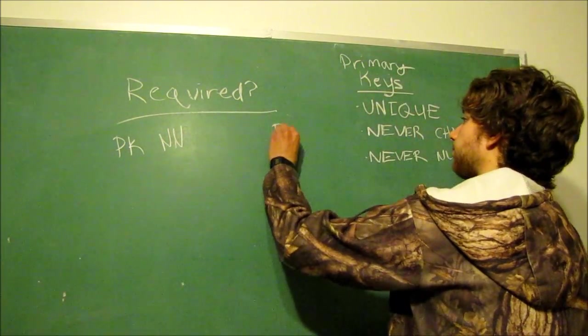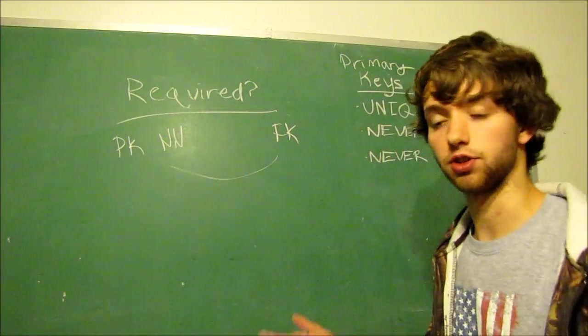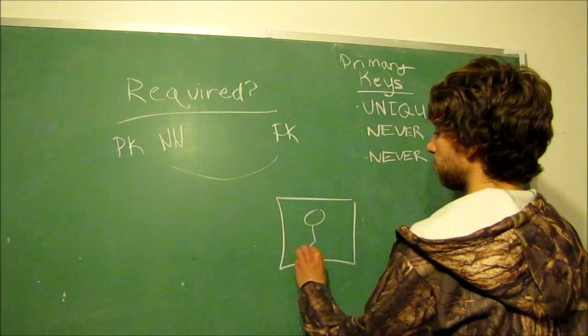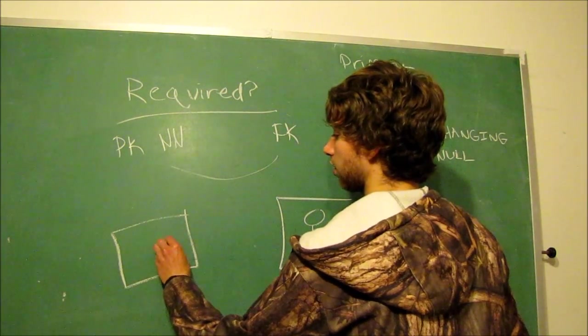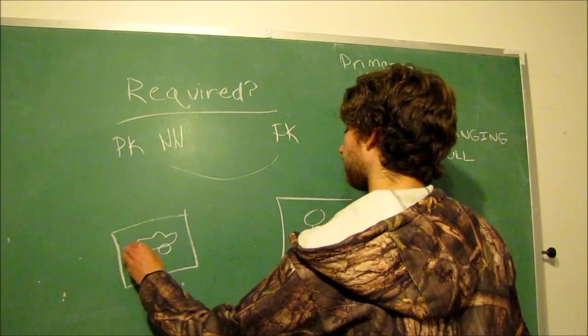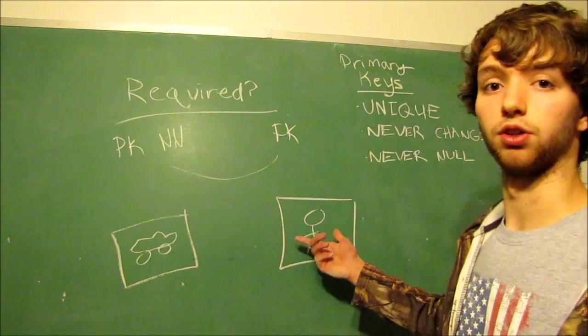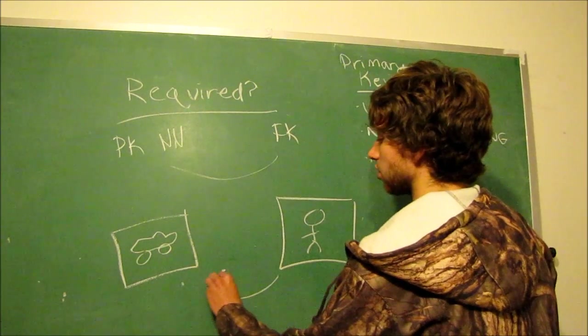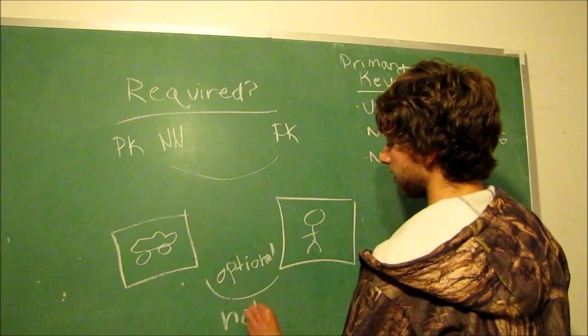For example, in that previous example, we had the person, the user table, and then we have this car table of the cars that the user owned. He could have one car. Well, he might not currently own a car. Therefore, we don't have a connection to this table. Therefore, this connection is optional or not required.